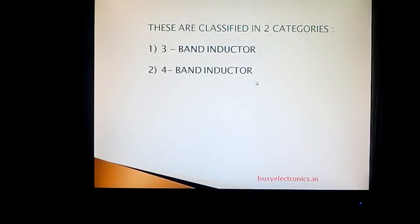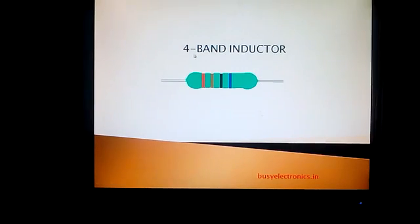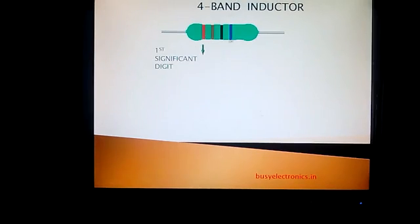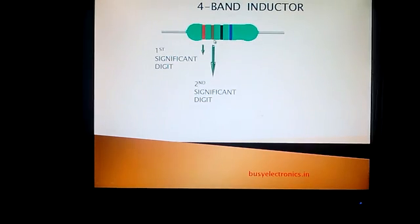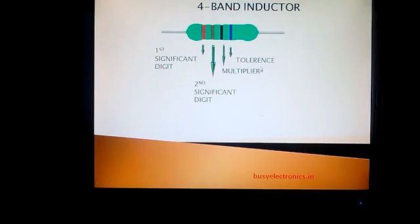Let us first take a 4-band inductor. As you all can see, there are 4 bands and we will determine the inductance value from these bands. These 4 bands have different names. The first band is called the first significant digit, the next band is the second significant digit, the third one is a multiplier, and the fourth one is a tolerance.